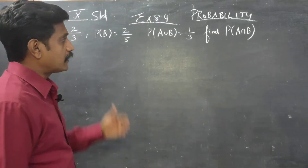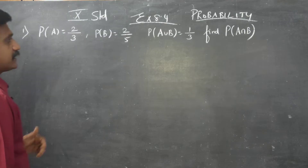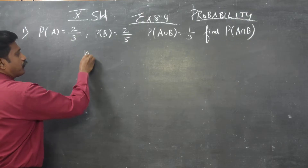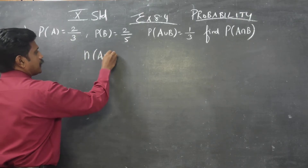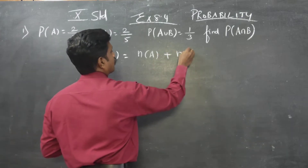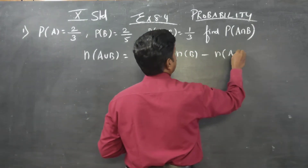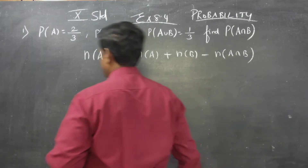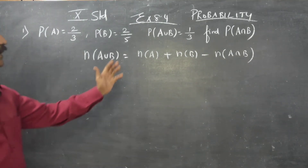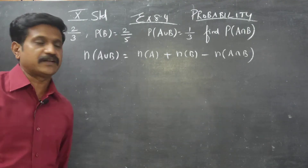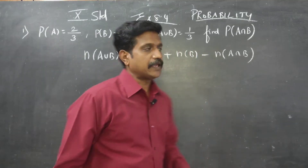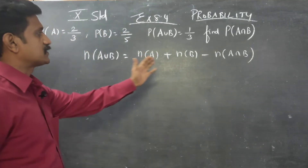In lower classes, in set theory, we have the formula: n of A union B is equal to n of A plus n of B minus n of A intersection B. Here, n of A union B is the cardinal number of the set in the formula of the set.